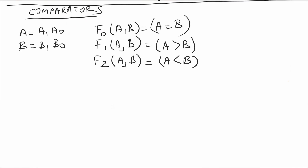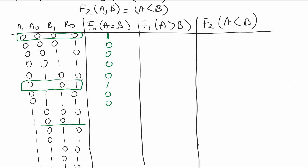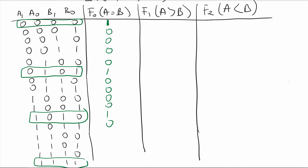To implement these functions, the first thing you would do is write the truth table. Here is our table — let's look at F0. If A1, A0 and B1, B0 are all zero, they are equal, so output is 1. Going through the rows: where values are not equal the output is 0, and where they are equal the output is 1. So F0 outputs: 1,0,0,0 / 0,1,0,0 / 0,0,1,0 / 0,0,0,1.